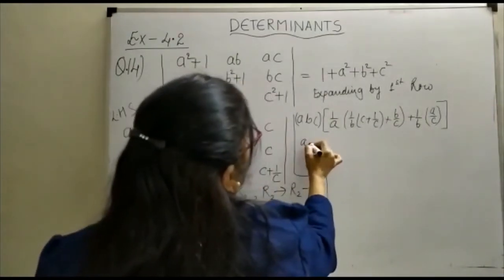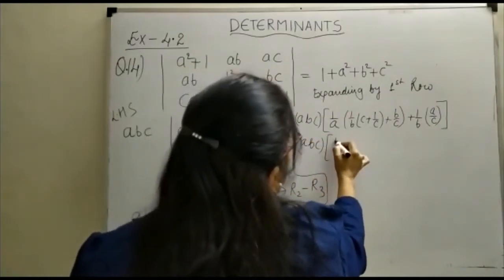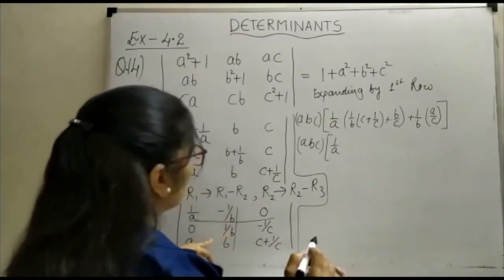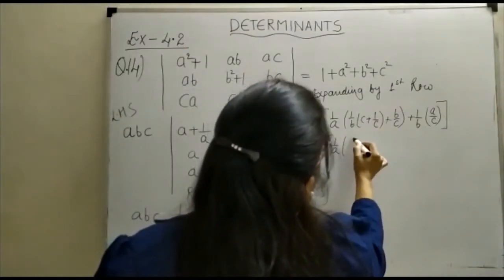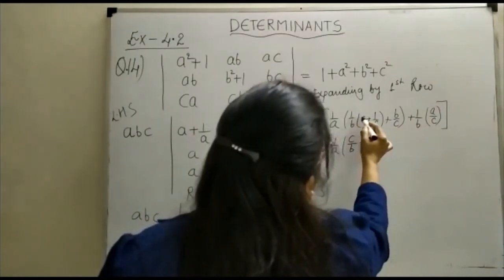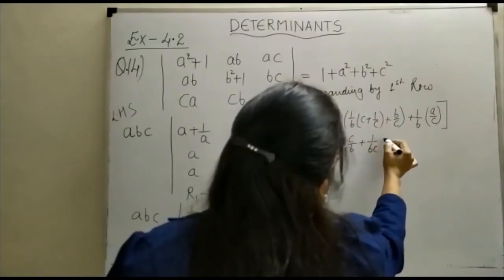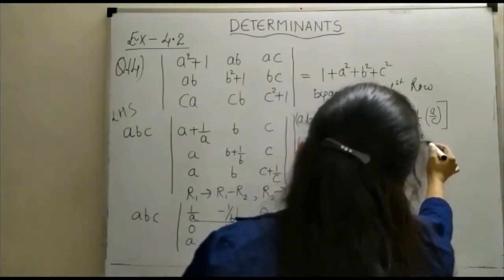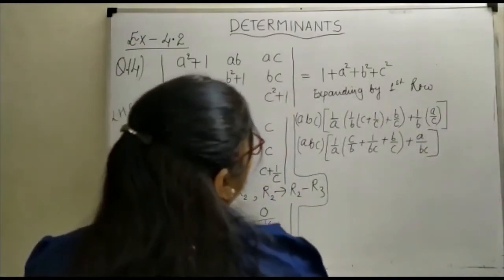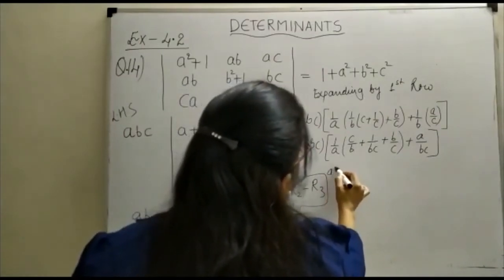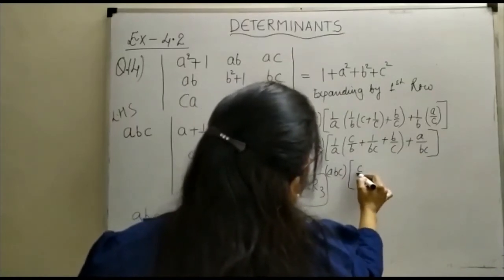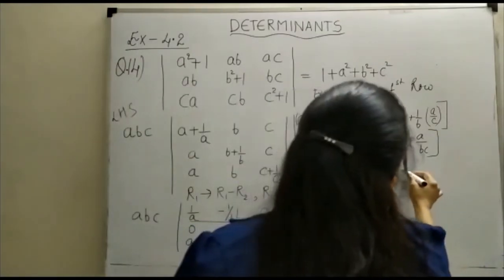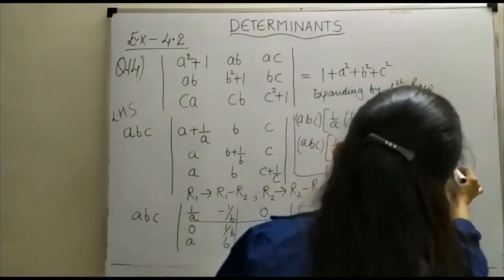Combining, we get abc times the quantity: c/b + 1/bc + b/c + a/(bc). Multiplying through by abc gives: c/ab + 1/abc·abc ... let us take LCM as abc. Multiplying abc by the bracket, we get: abc·(c/b) + abc·(1/bc) + abc·(b/c) + abc·(a/bc) = c²/... bringing everything over a common denominator of abc.